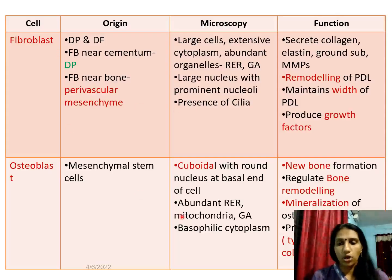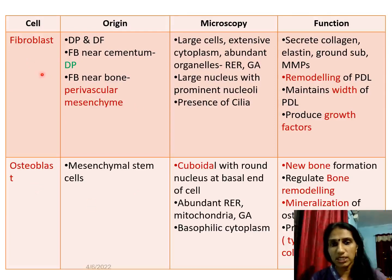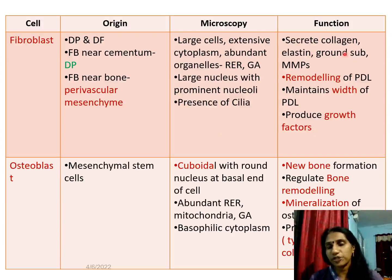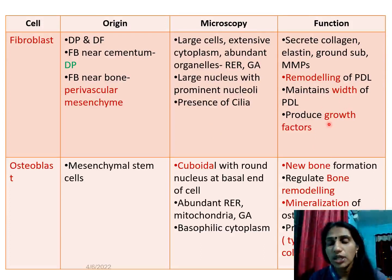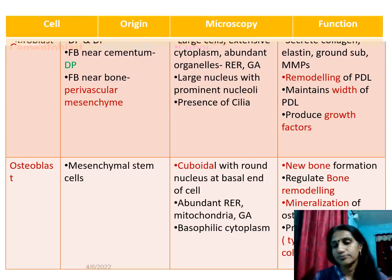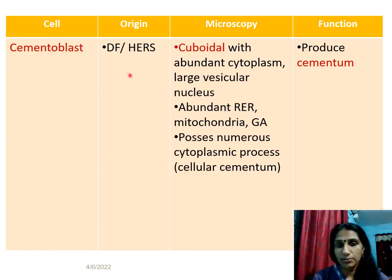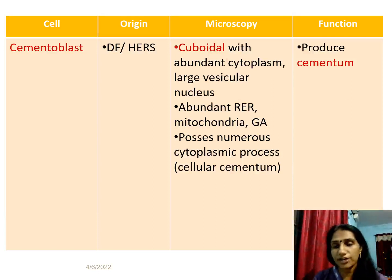To summarize synthetic cells: fibroblasts form collagen fibers, maintain the width of the periodontal ligament, and produce growth factors; osteoblasts form bone and regulate bone remodeling; cementoblasts originate from dental follicle and undifferentiated mesenchymal cells, are cuboidal with cytoplasmic processes directed towards the PDL, and their function is to produce cementum.